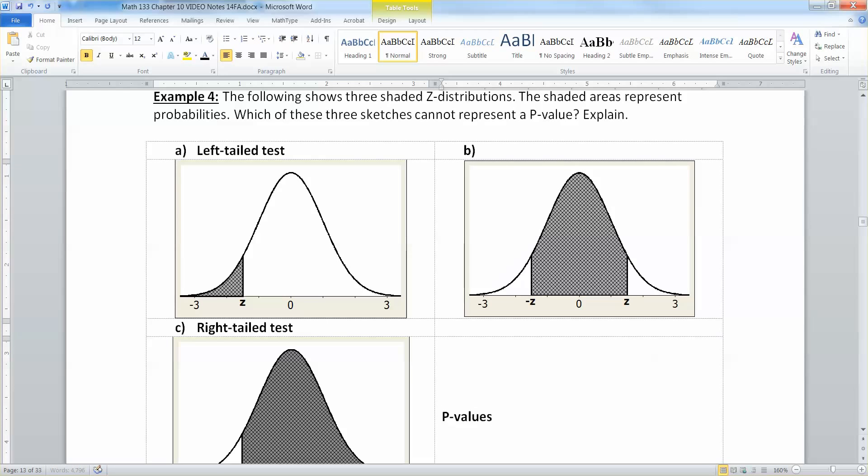P-values are about the probabilities of being in the extremes, i.e. the tails. They're not about being in the center. This means that B is no good, is not a graph of p-values.